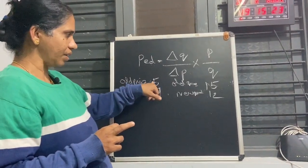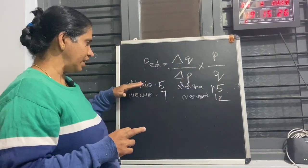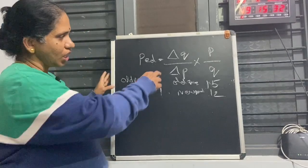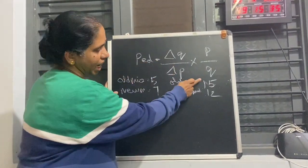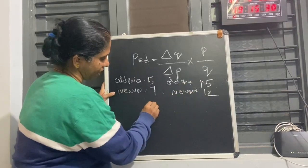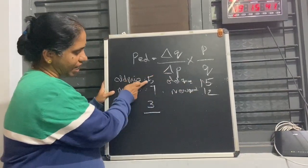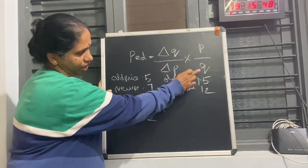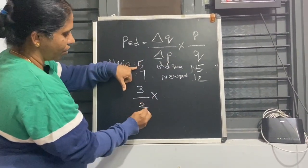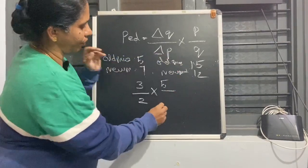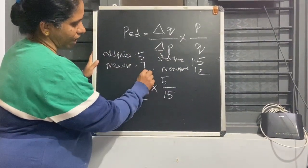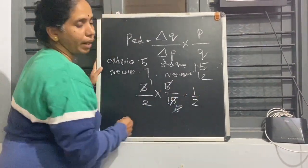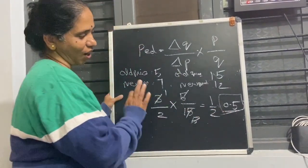The old price is 5 rupees, and at that price they bought 15 units. When the price increased to 7 rupees, the quantity demanded became 12 units. So delta Q — the change in quantity — is 15 minus 12, which equals 3. The change in price is 7 minus 5, which equals 2. The initial price P is 5, and the initial quantity Q is 15. Substituting: 3 over 2, multiplied by 5 over 15. The 5s cancel and 15 simplifies to give 1 over 2, so the answer is 0.5.